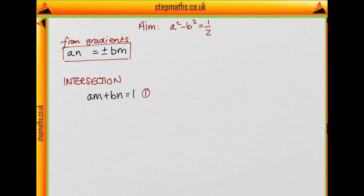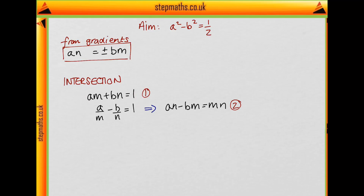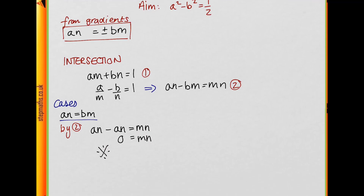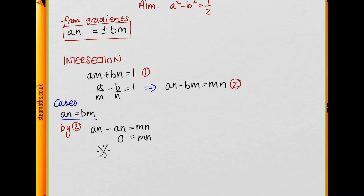The point (m, n) lies on both the line and curve. On the line: am + bn = 1 (equation 1). On the curve: a/m - b/n = 1, which multiplied by mn gives an - bm = mn (equation 2). Considering the case an = bm first and substituting into equation 2 gives an - an = mn, so 0 = mn. But m and n cannot be 0 as they appear in the denominators of the curve. This is a contradiction, so an ≠ bm.